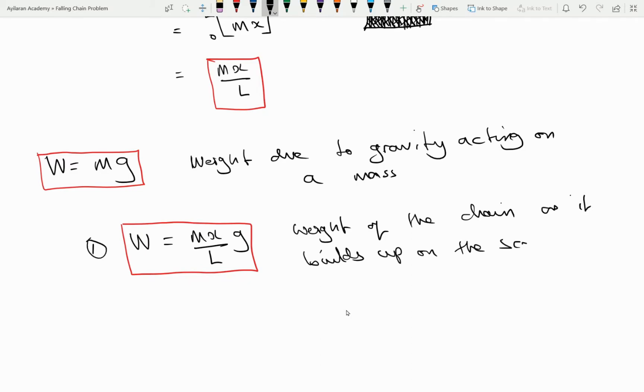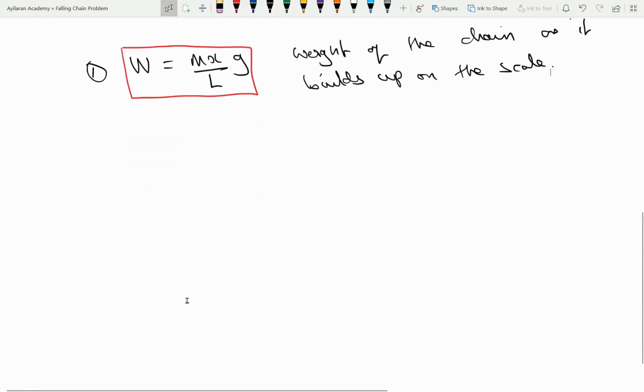Now this is the first part of what the pan scale would be reading. The pan scale reads not only the weight but especially if you're dropping an object it will read the impulse of the object hitting the pan.